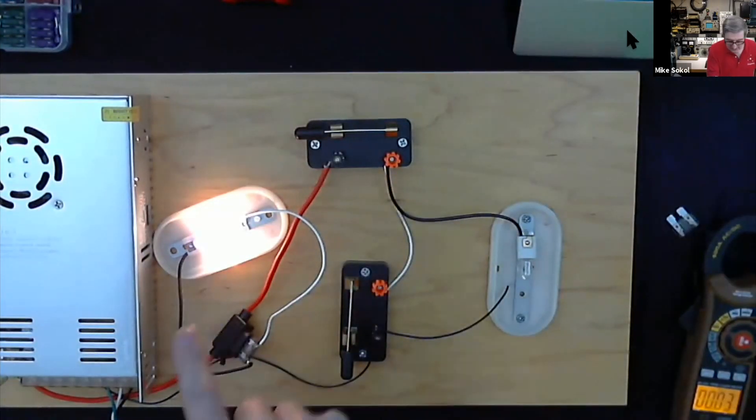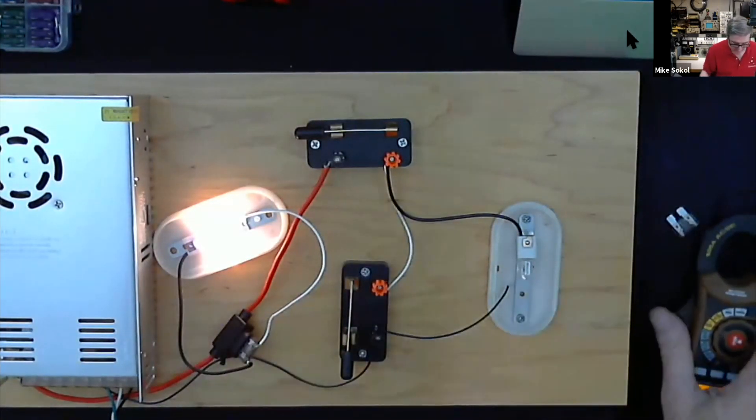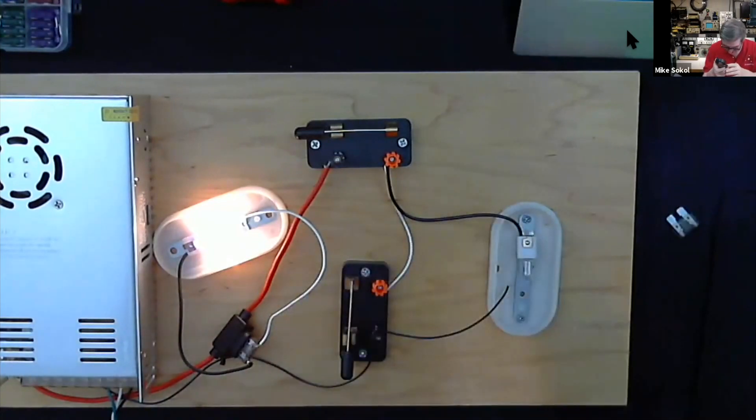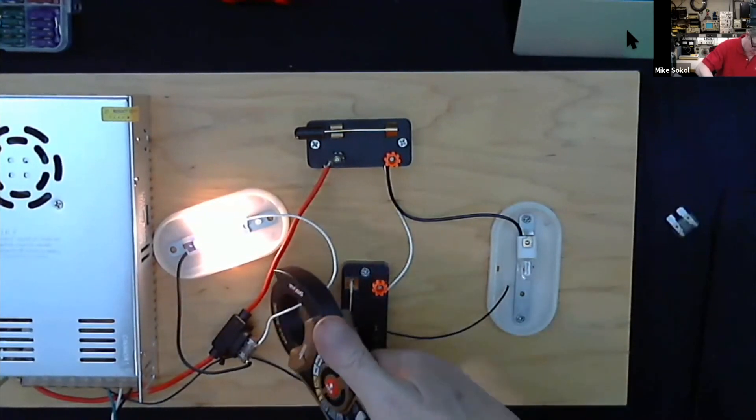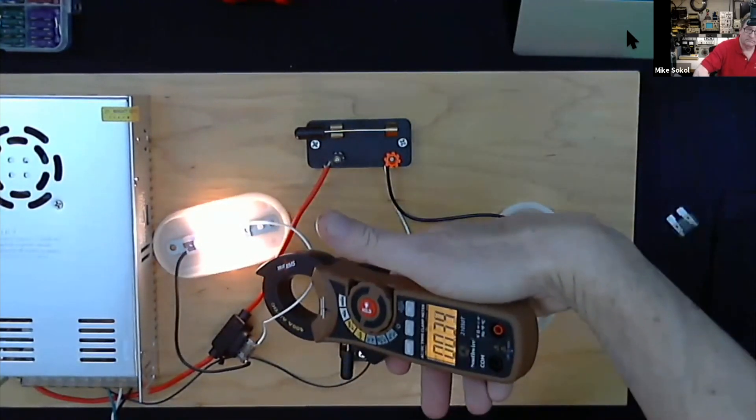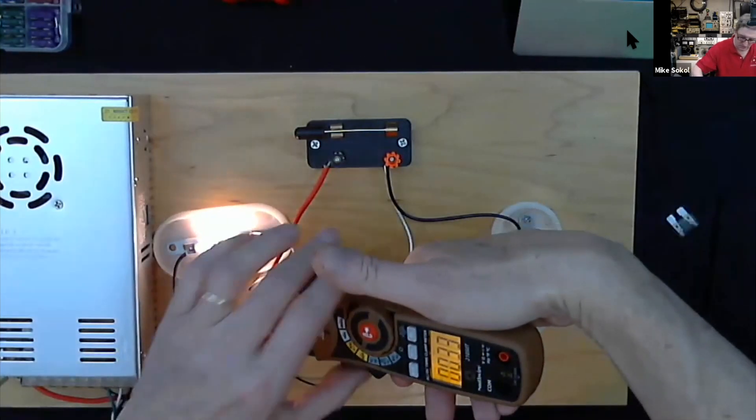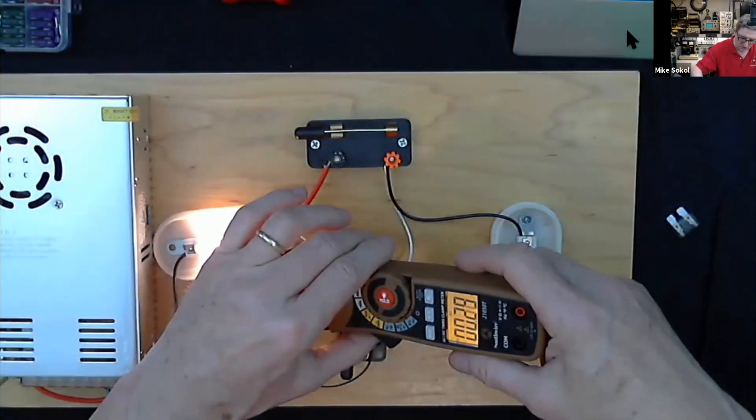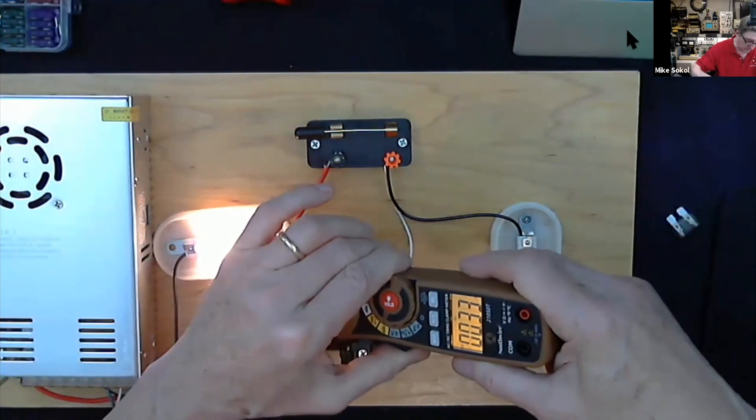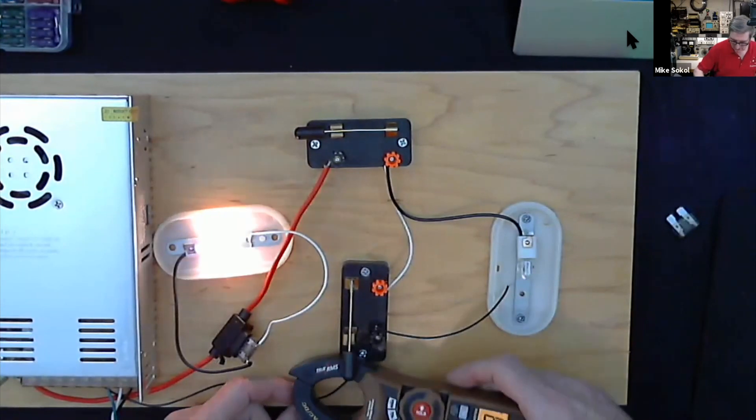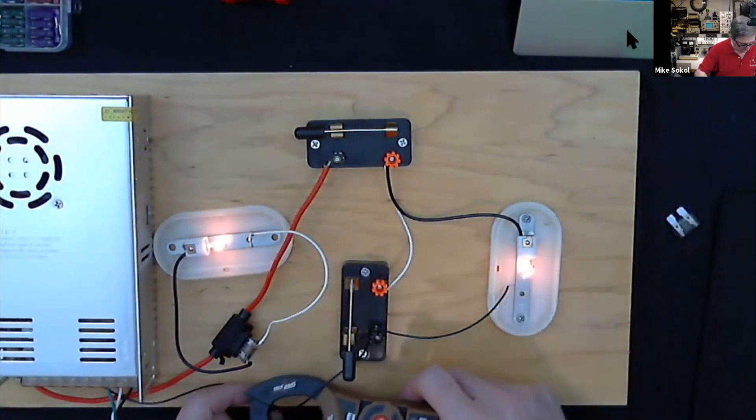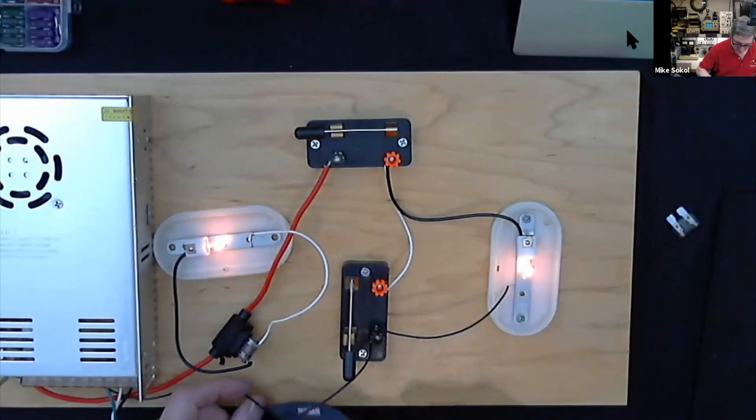Now this thing has got current going through it. We can go in there, we'll re-zero our meter. We can see that there's about a quarter or so of an ampere of current going through there.